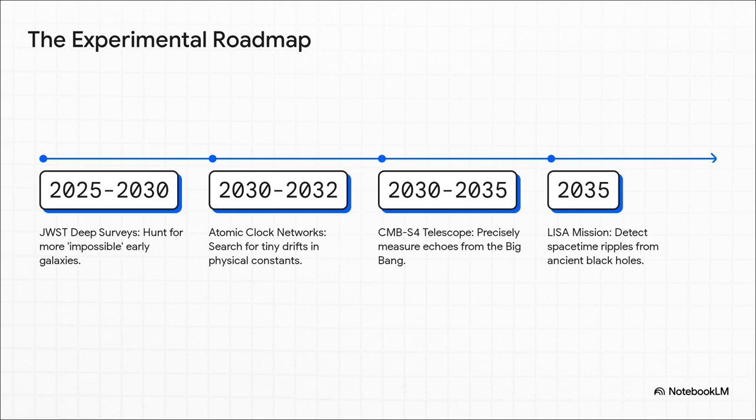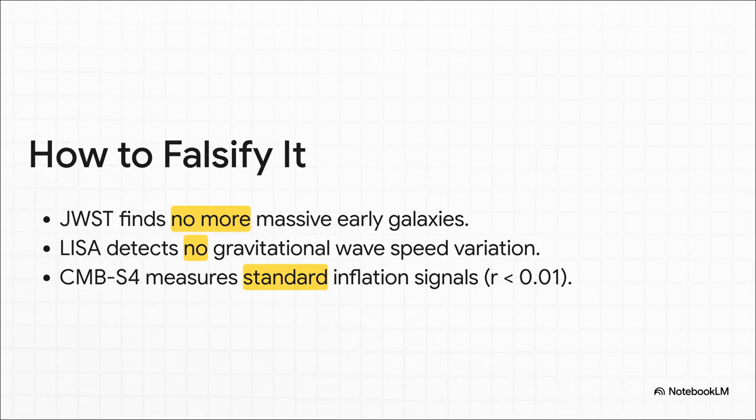Over the next decade, we're going to be attacking this from every possible angle. The Webb Telescope is going to continue its hunt for more of these impossible galaxies. Right here on Earth, hyper-accurate atomic clocks will be listening for the faintest whispers of changing constants. And brand new telescopes will measure echoes from the Big Bang itself with just unbelievable precision. And this, right here, is the mark of real science.